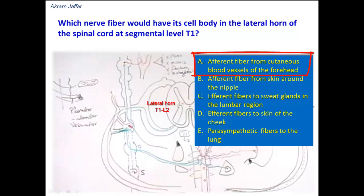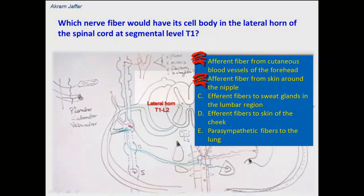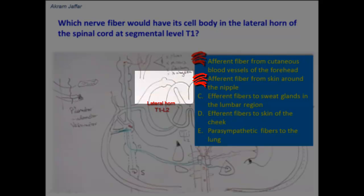Option A: afferent fiber from cutaneous blood vessels of the forehead. Afferent fibers are sensory fibers and they are not related to the lateral horn — the lateral horn is related to sympathetic fibers. Option B: afferent fiber from skin around the nipple — again, not related, because these are sensory fibers and they have their cell bodies located in the dorsal root ganglion, which has pseudounipolar cells.